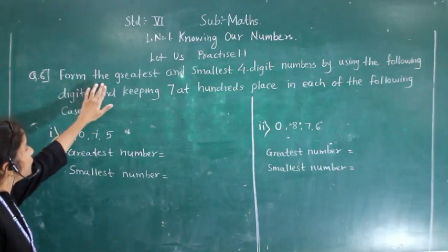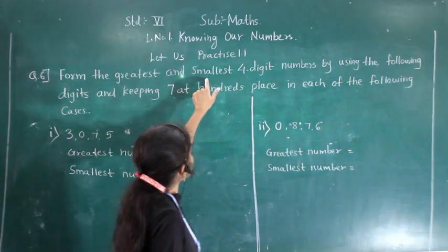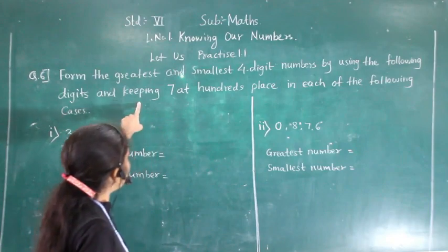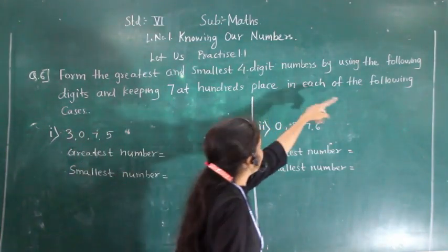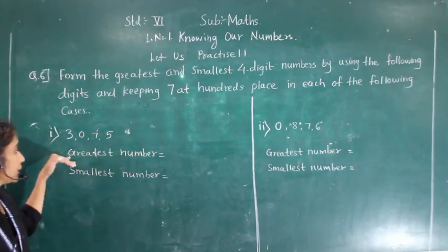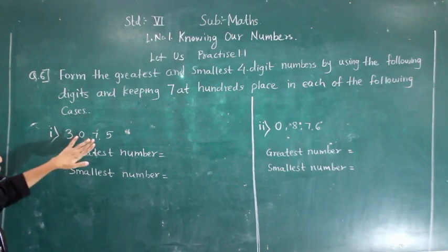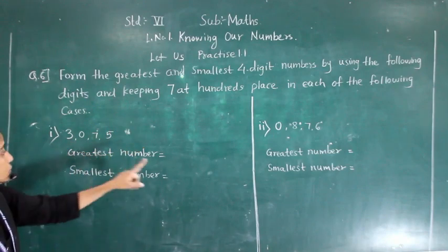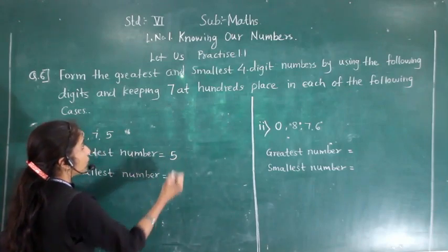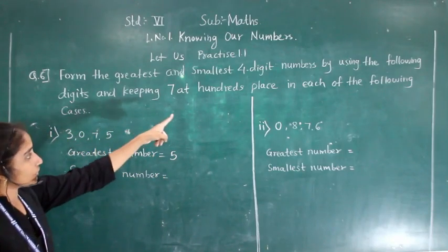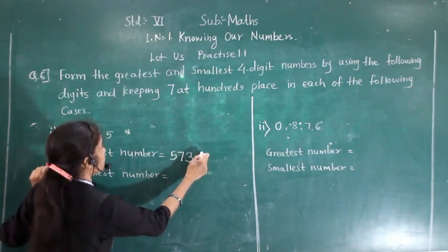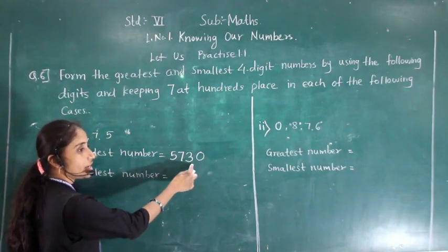Question number 6: find the greatest and smallest 4-digit numbers using the given digits and keeping 7 at the hundreds place. For the greatest number, except 7, the greatest digit is 5 — so we write 5, then 7 at hundreds place, then 3 and 0, giving us 5730 as the greatest number.